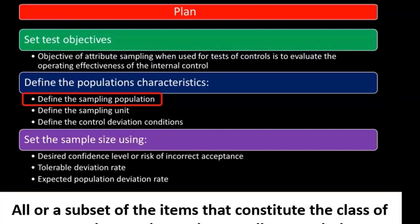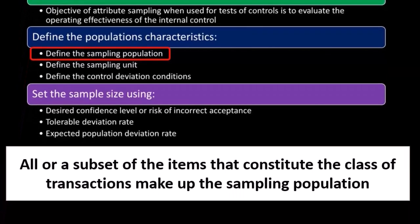The control may be indicated by initials related to that documentation. So the population size then would be all of the documents involved in the purchasing process that should have this indication on them,